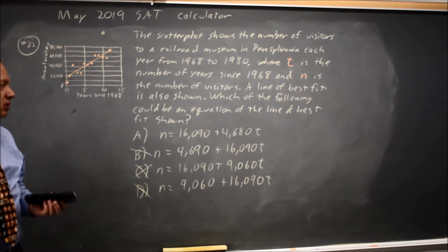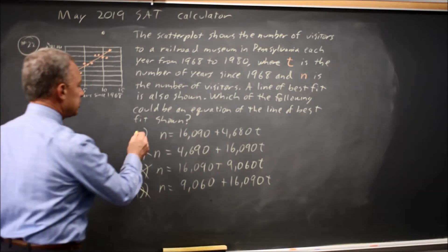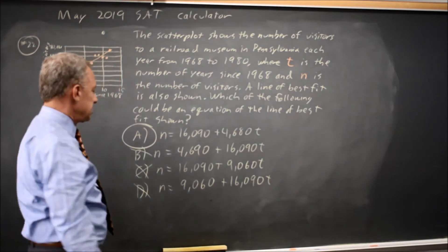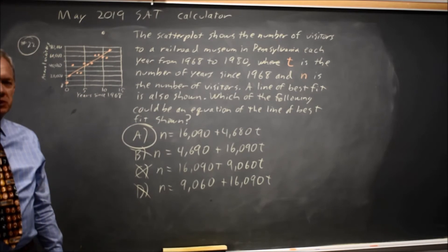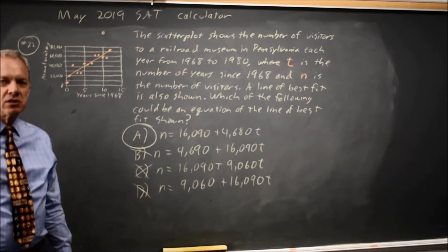So which could be the equation for the line of best fit would be only choice A because B and D have the wrong y-intercept and choice C has the wrong slope.